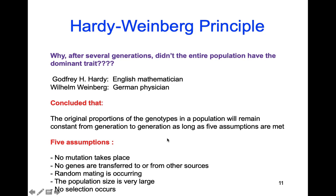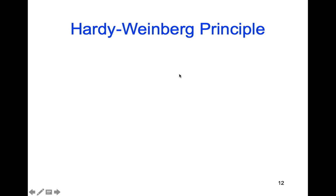Those five conditions are: no mutations take place; no genes are transferred in or out — meaning nobody new enters or leaves the population; random mating is occurring within that population; the population is very large so percentages stay the same; and there is no natural selection. If all five are met, then genotype percentages will remain the same. But in the real world, these things don't happen — this would only apply in a perfect situation.